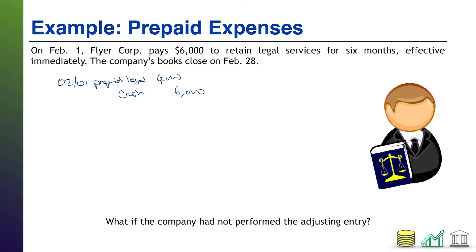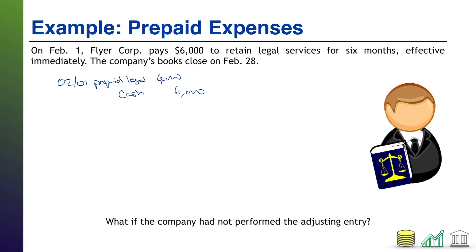When we get to February 28th, the books close — in other words, we're going to prepare some financial statements, the period is over. Adjusting journal entries are made after you've put together your trial balance, and you ask: does anything need to be corrected to better portray the balance sheet and make sure revenues and expenses wind up in the period where they should? At the end of February, your balance sheet is going to show an asset called prepaid legal of $6,000 for 6 months of services — so arguably $1,000 per month. $6,000 divided by 6 months means you're paying $1,000 per month for these services.